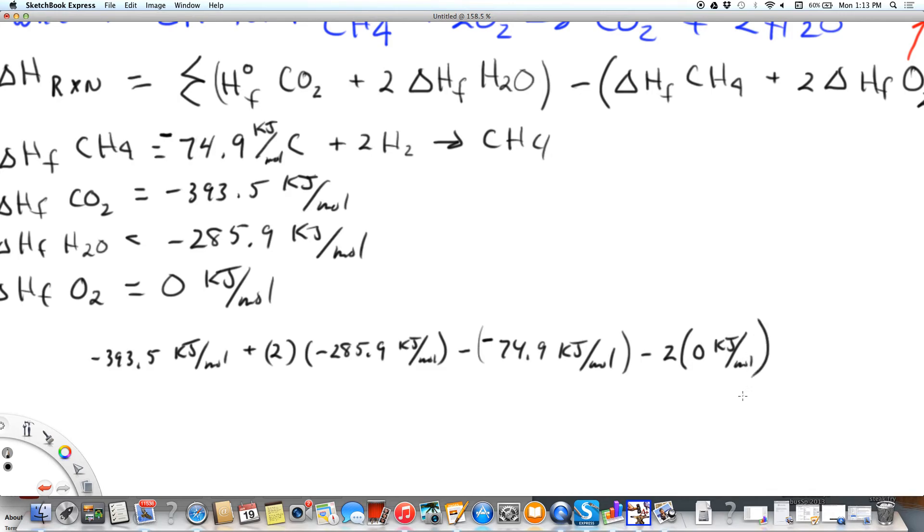We add all of these together and we get the change of heat of this particular reaction. We're burning methane, we would expect it to be exothermic, and indeed it is. When we add all of this together, we get minus 890.4 kilojoules per mole.